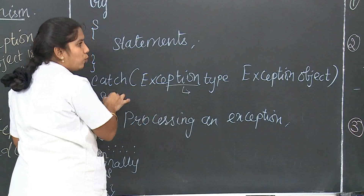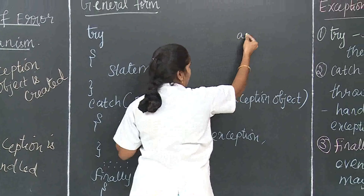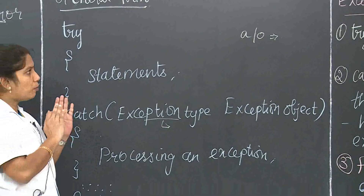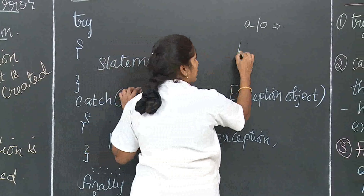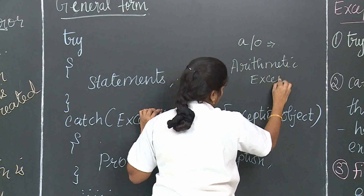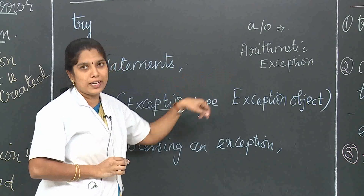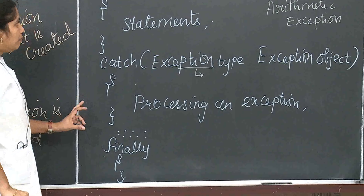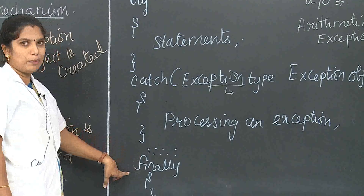If you have A divided by 0, there is no possibility of dividing any number by 0, so an ArithmeticException will occur. This exception is thrown to the catch block, where the exception type handles the arithmetic exception. Finally, the final statement is executed. A try block must be immediately followed by a catch block or a finally block.